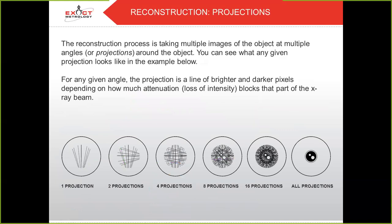On to reconstruction. The reconstruction process is taking multiple images of the object at multiple angles, or projections, around the object. For any given angle, the projection is a line of brighter and darker pixels depending on how much attenuation or loss of intensity blocks that part of the x-ray beam. One projection will get you a simple x-ray image; two will give you a different angle on that image. As you build up more and more images, you start to develop a clear 3D dataset of whatever you are scanning.